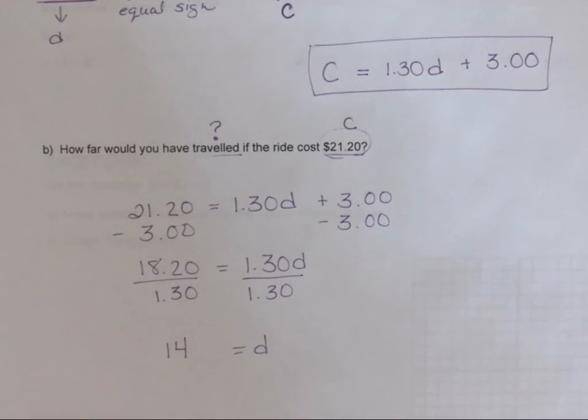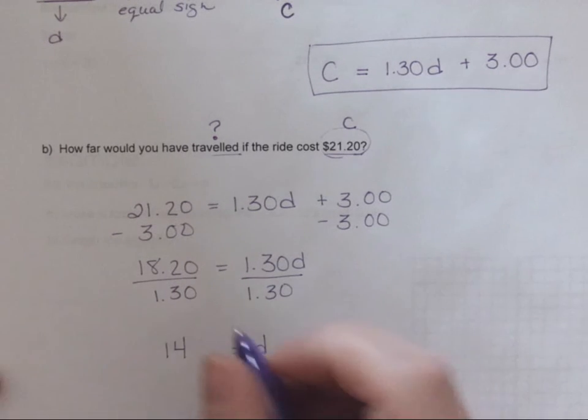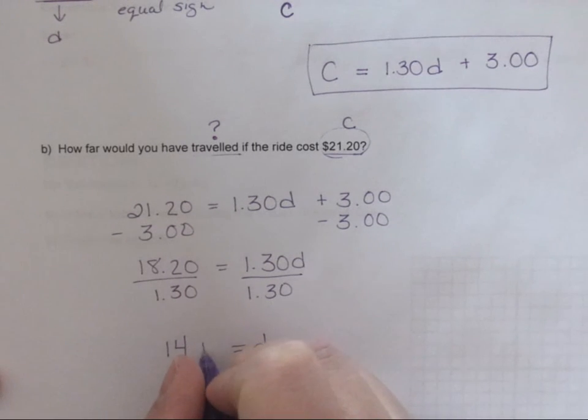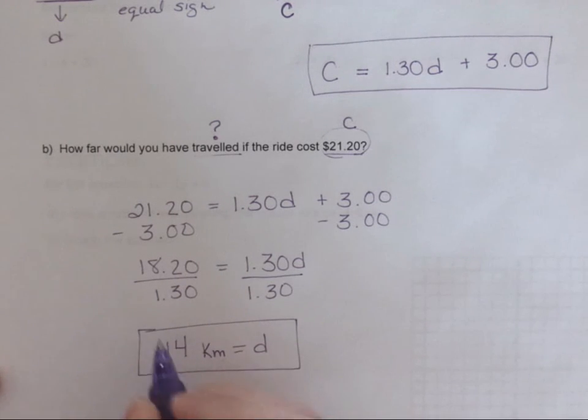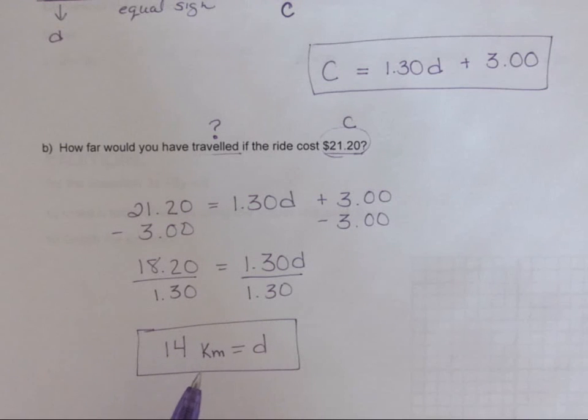And d represents our kilometers traveled, so it would be not money but fourteen kilometers. So now we have to be really conscious, we have to pay attention to our units of measure. Like this one was solving for a distance so we're not going to put a dollar sign on the fourteen, we're going to use the kilometer. Keep that in mind. If your units are incorrect you will lose a half mark on both your hand-in assignments and on your test.